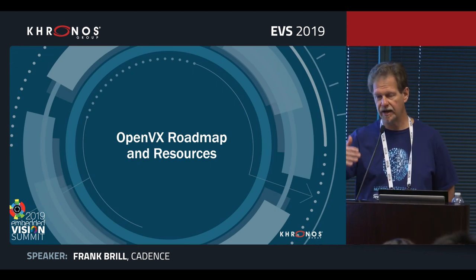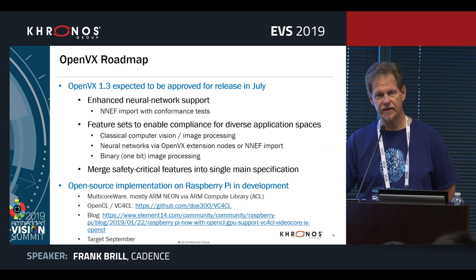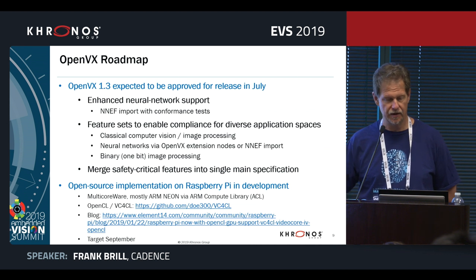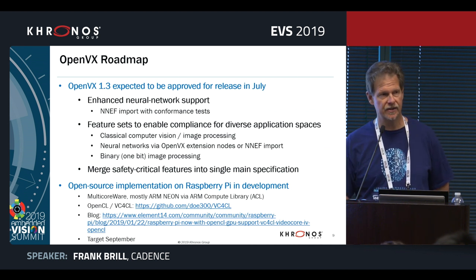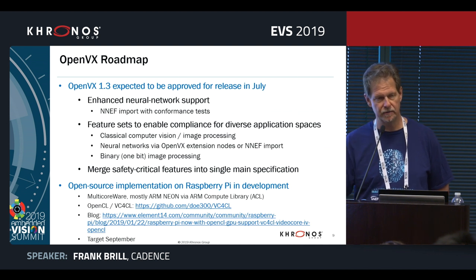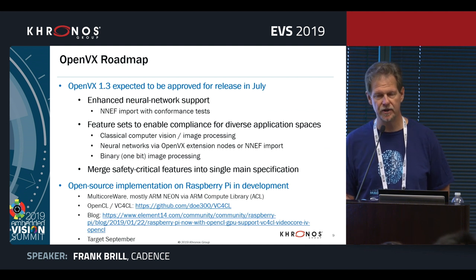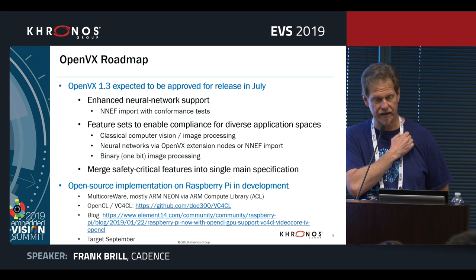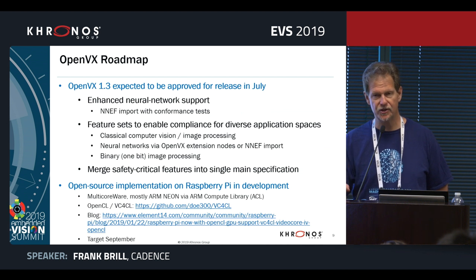The currently available version of OpenVX is 1.2. OpenVX 1.3 is essentially complete — in review and finalization — and expected to be approved by end of June and publicly available in July. Key features include enhanced neural network support: you can import an entire neural network description using the NNEF format, with conformance tests to verify that the imported network executes correctly.